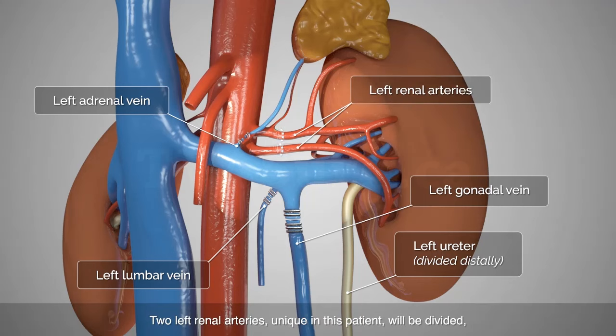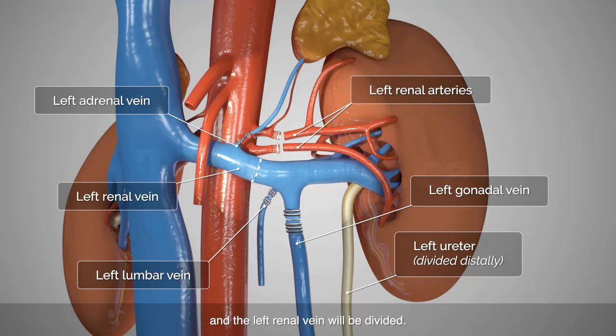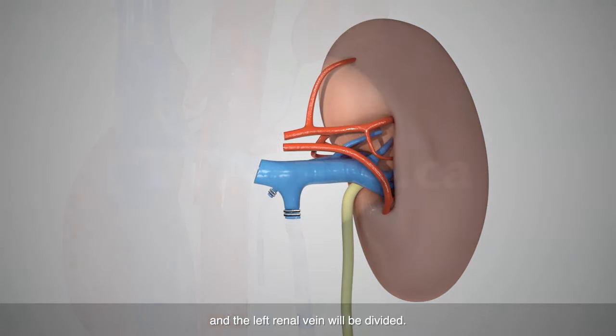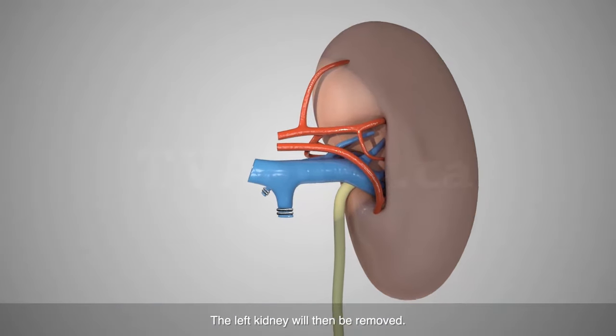Two left renal arteries, unique in this patient, will be divided, and the left renal vein will be divided. The left kidney will then be removed.